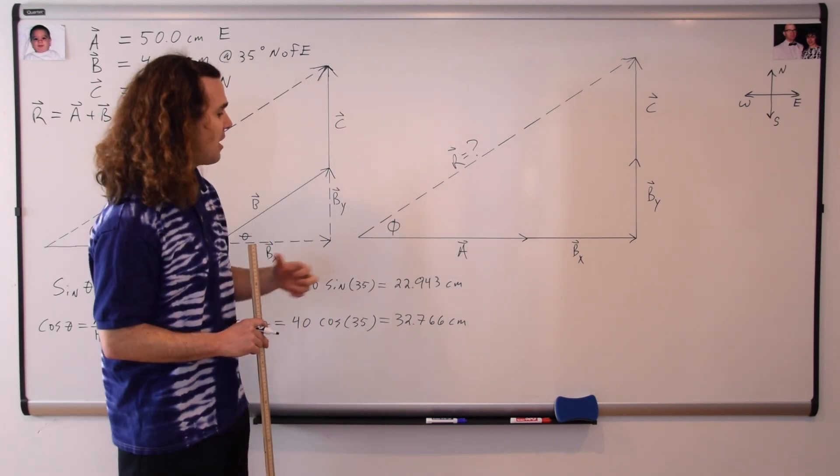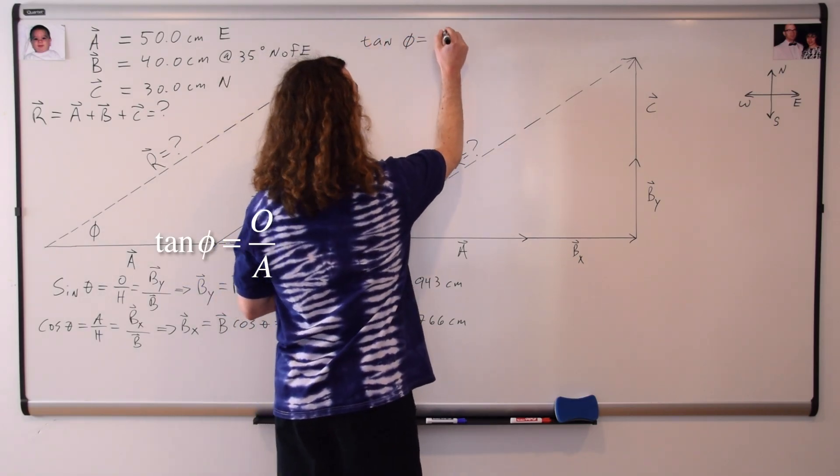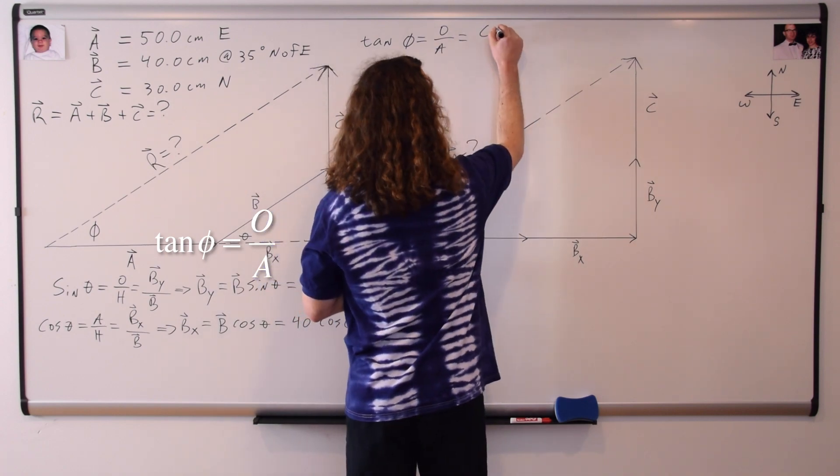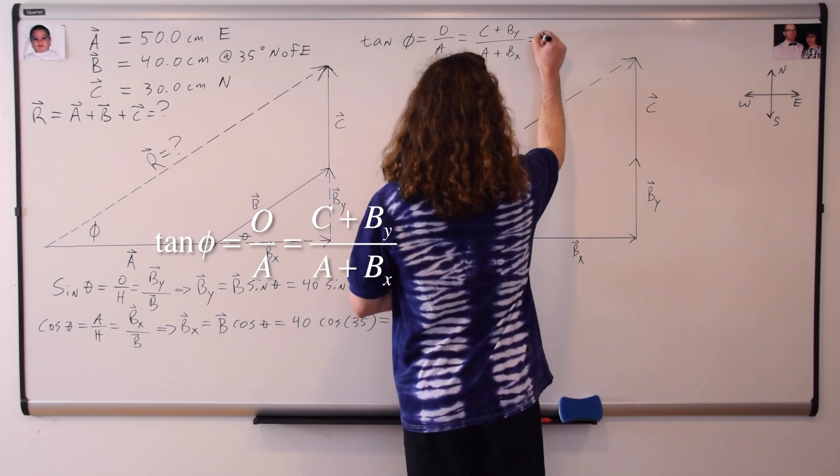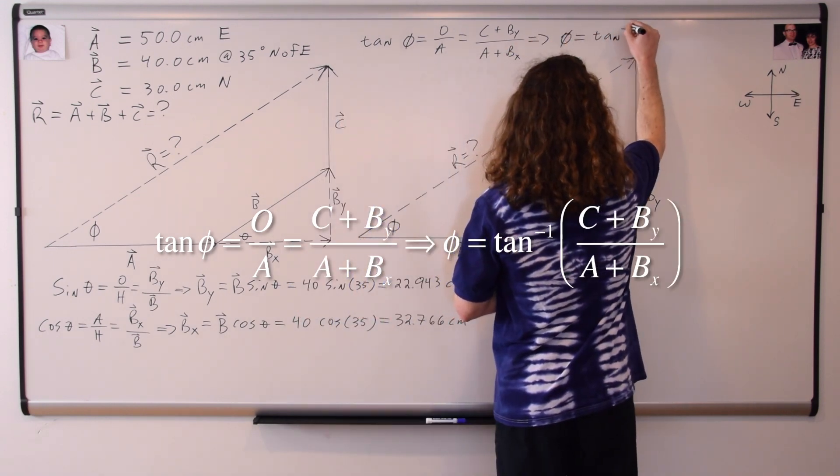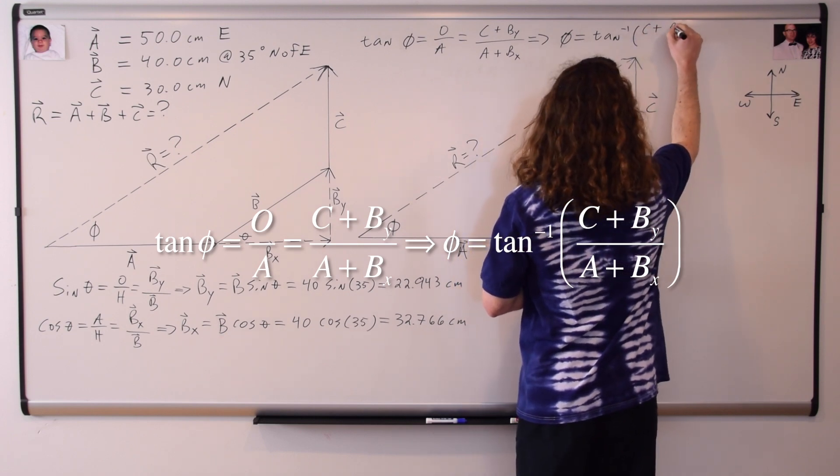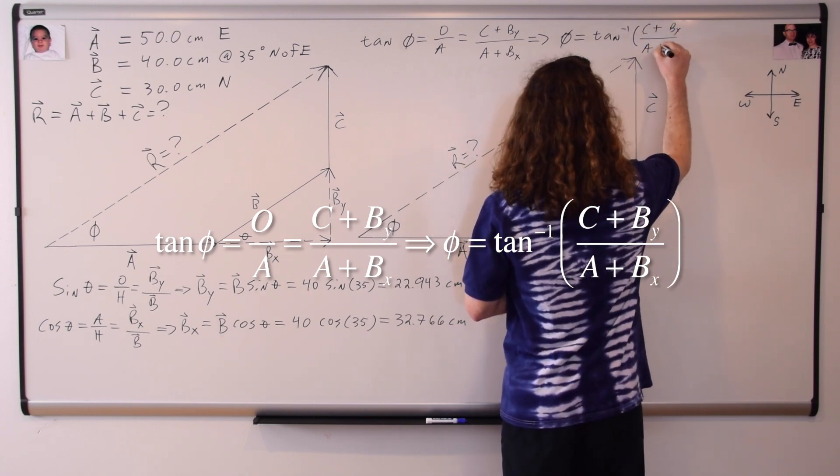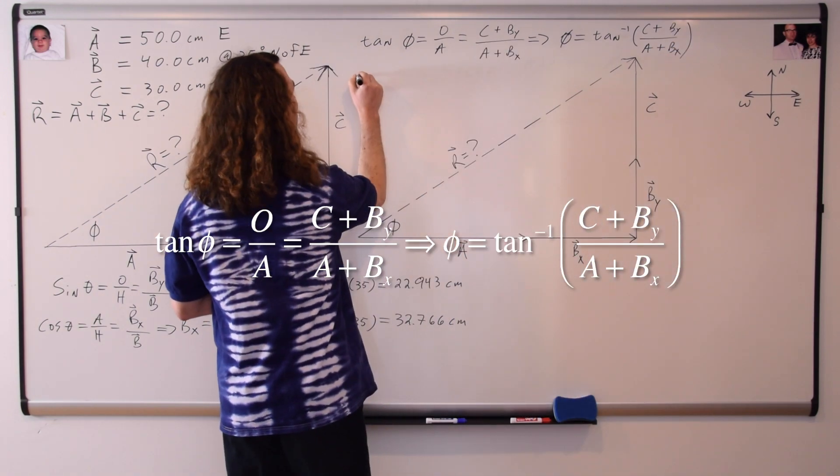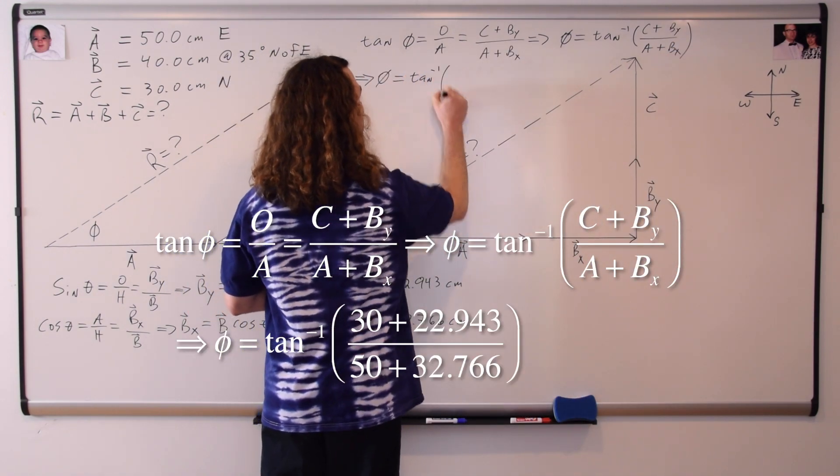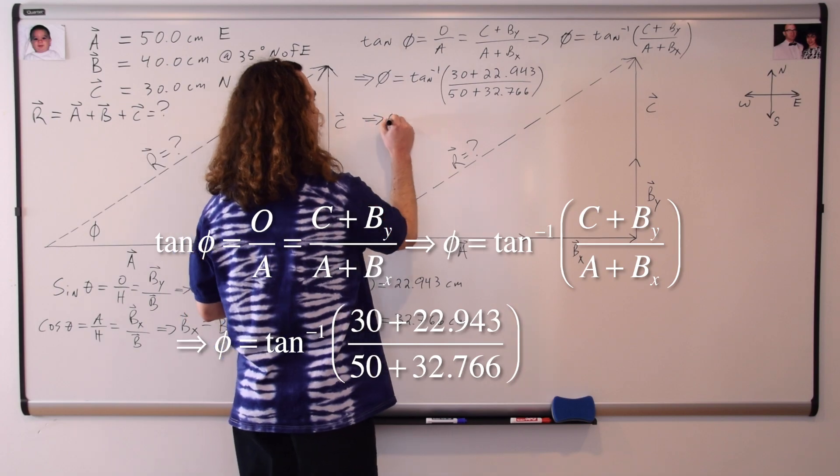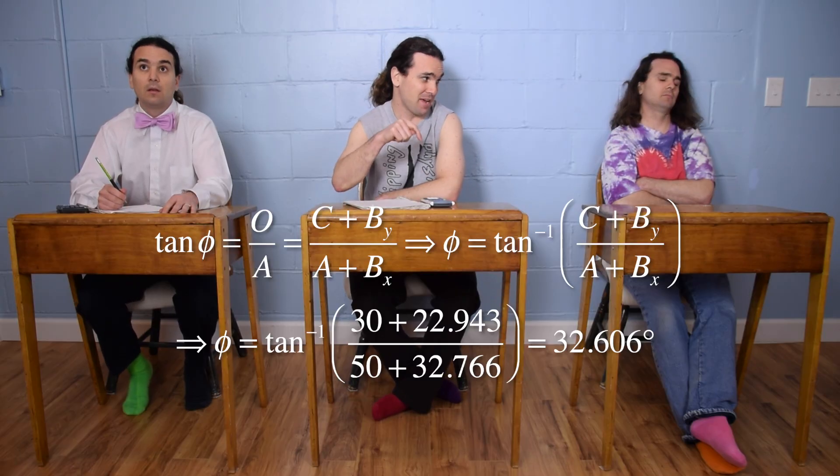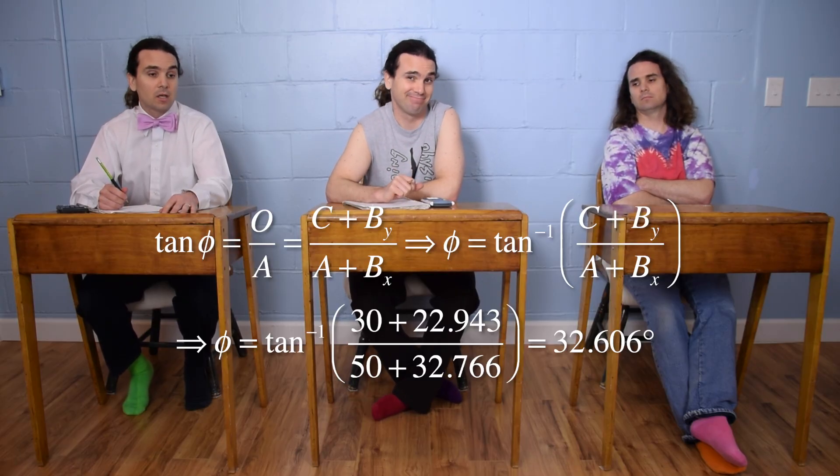Bo, could you please figure out phi, the angle for our resultant vector? We can use tangent phi equals opposite over adjacent, and opposite the angle is C plus B in the y direction, and adjacent is A plus B in the x direction. Taking the inverse tangent of the whole equation gives us that phi equals the inverse tangent of the quantity C plus B in the y direction, divided by A plus B in the x direction. With numbers, that is the inverse tangent of 30 plus 22.943 divided by 50 plus 32.766, which works out to be 32.606 degrees, and my calculator is in degree mode. So I know I'm right.